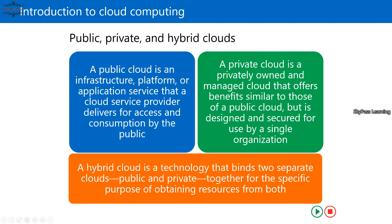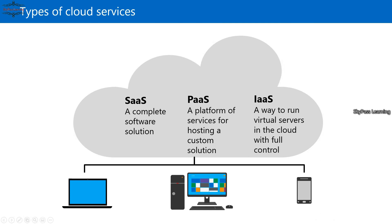Cloud services are categorized into three types. The first is Software as a Service, or SaaS. In SaaS, you get a fully formed software application delivered through a cloud-based service — for example, Office 365, Skype for Business, Microsoft Teams, or Exchange mailboxes in the cloud. These are complete end-to-end solutions; you just log in, administer things, and start using the services.